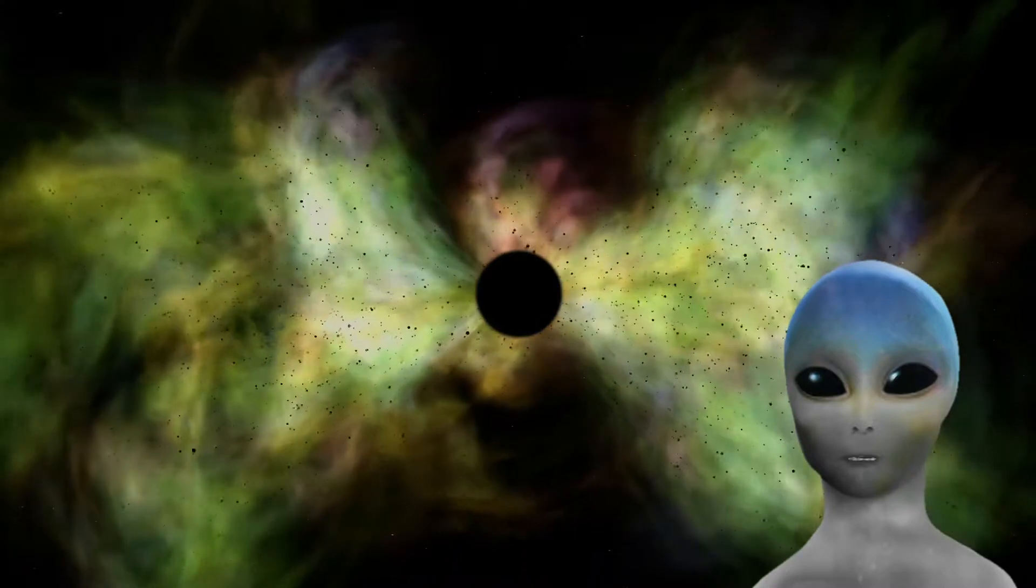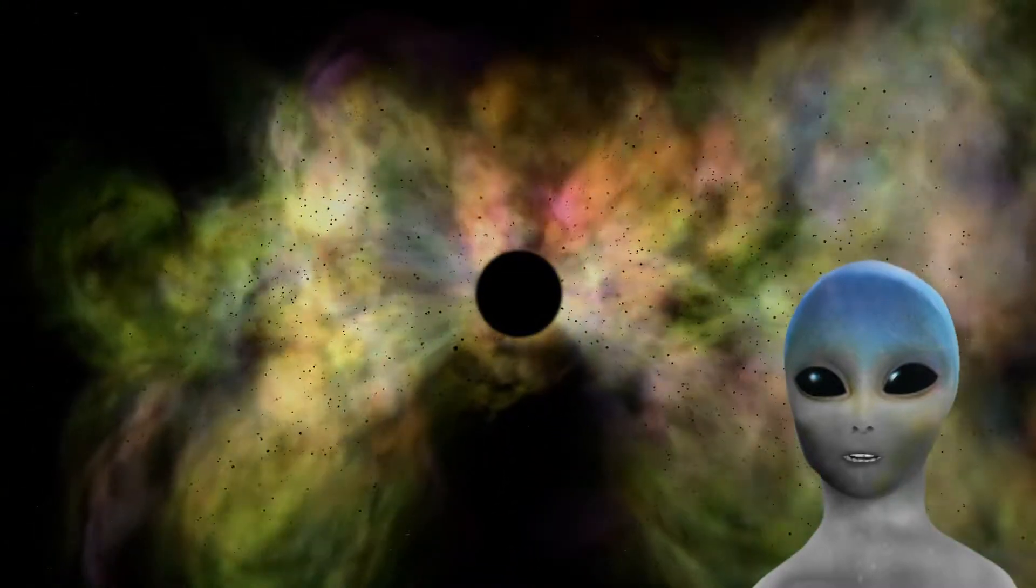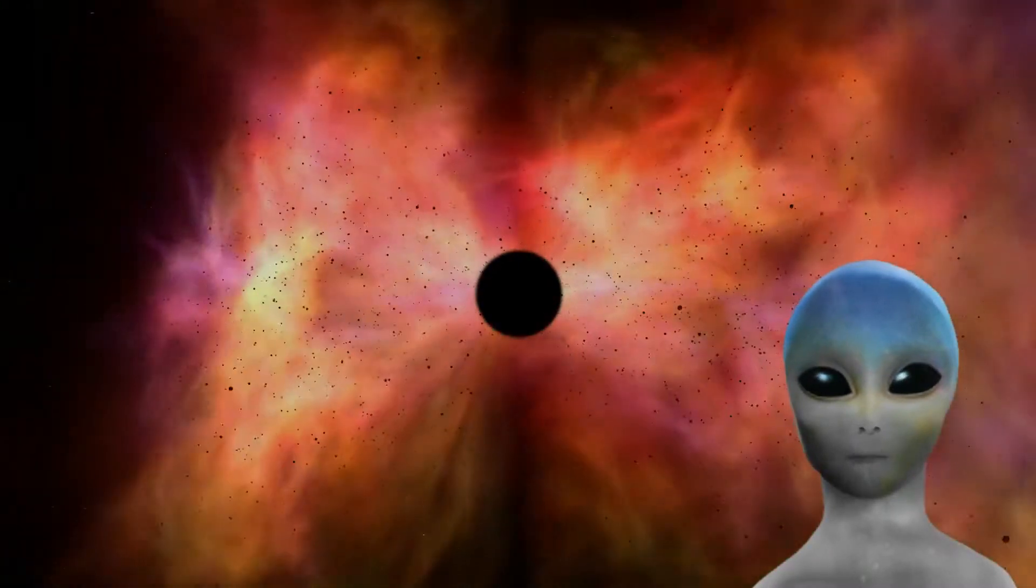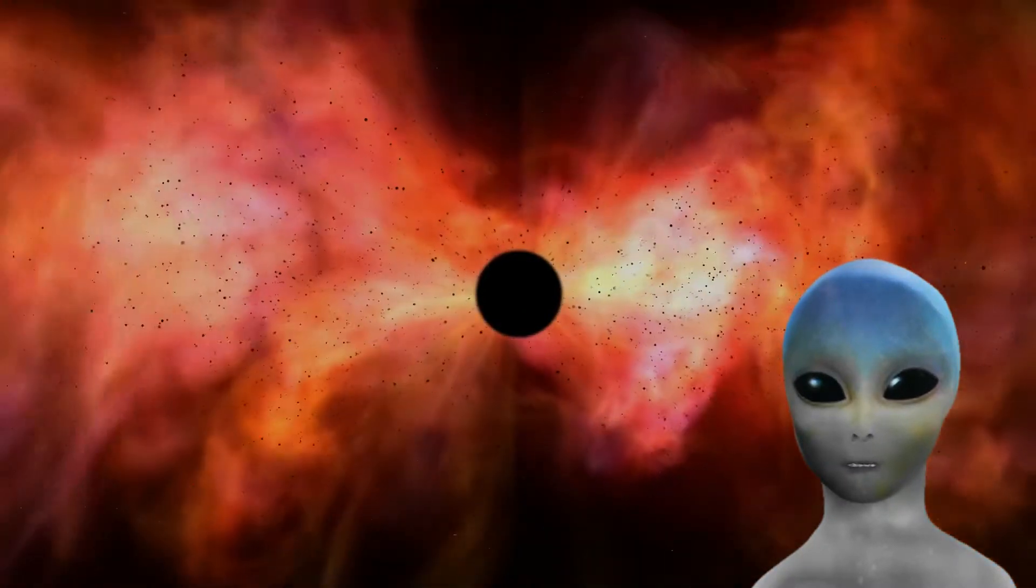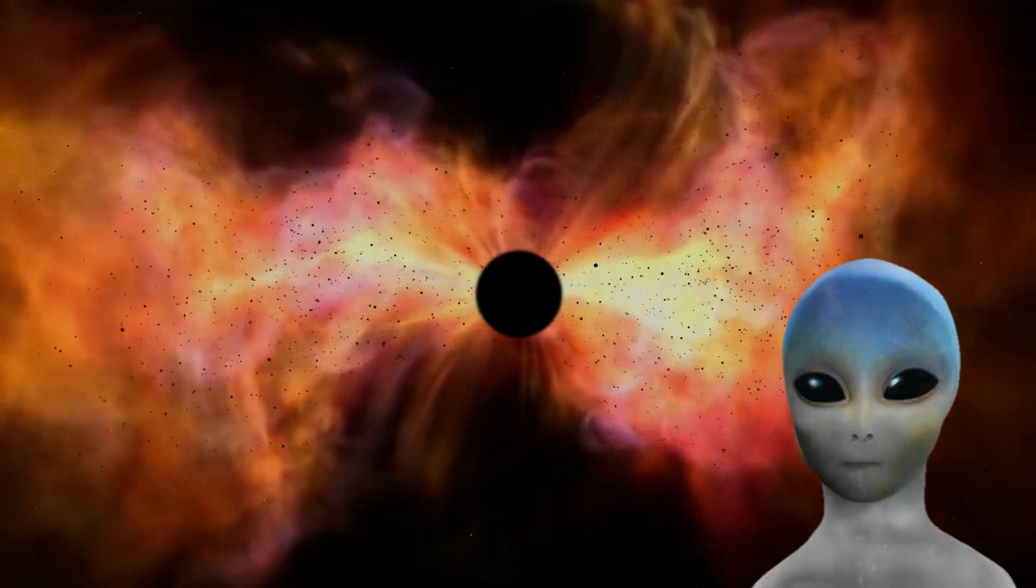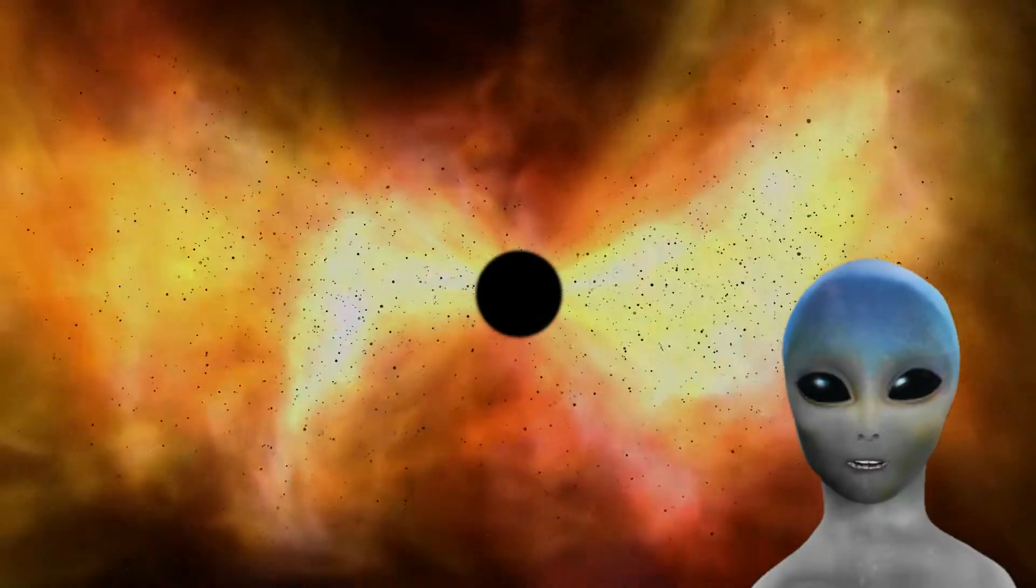It's known as Sagittarius A*. What will happen if we fall into one? Anything that enters the horizon of a black hole can be broken down into subatomic particles.